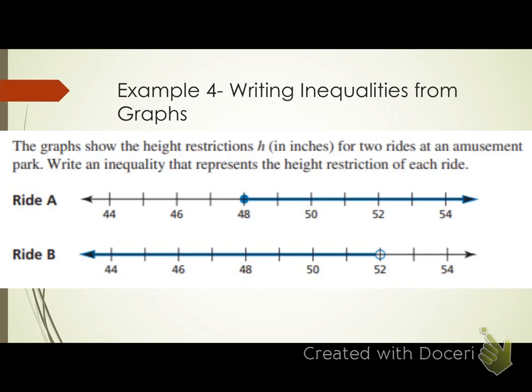Now we'll go the other direction: given a graph, write the inequality. The graphs show height restrictions H in inches for two rides at an amusement park. The problem gives us H as the variable — if a specific variable is given, use it; if not, you can choose your own.